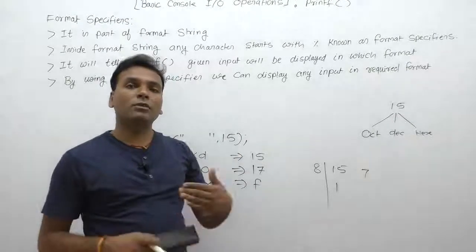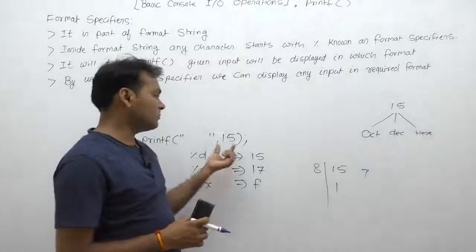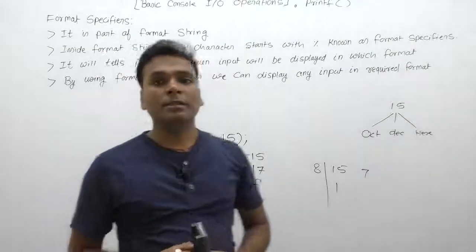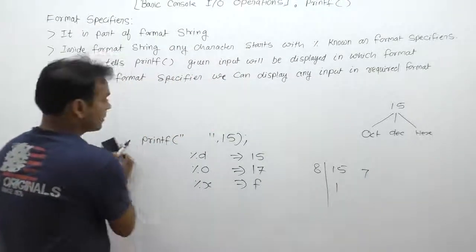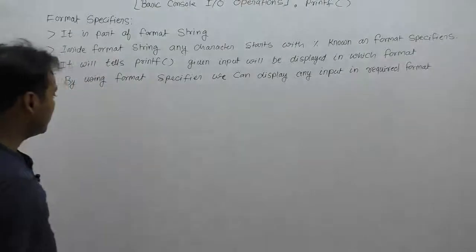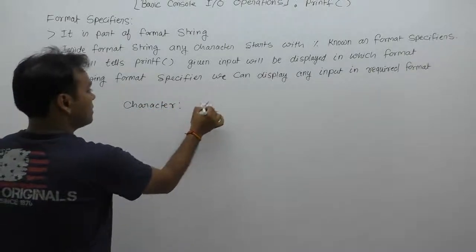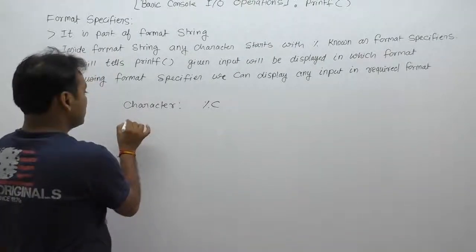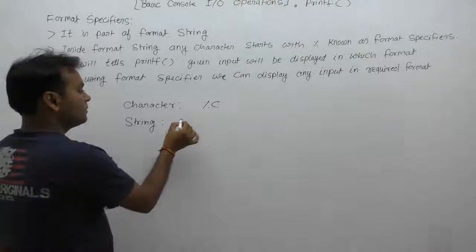So the same value 15 can be displayed as 15 in decimal, 17 in octal, and F in hexadecimal, according to different number systems. This is the role of format specifiers. In C language, different types of format specifiers are available. If you want to display character values, you should use %c. By using %c, we can display only a single character or single symbol. If you want to display a group of characters or strings, then we can use %s.